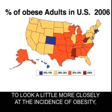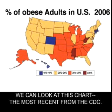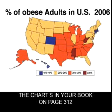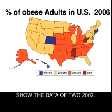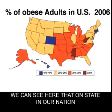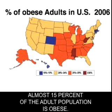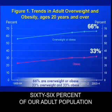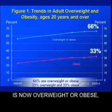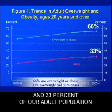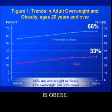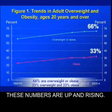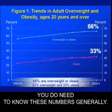To look more closely at the incidence of obesity, we can look at this chart — the most recent from the CDC. The charts in your book on page 312 show data up to 2002. We can see that in every state in our nation, at least 15% of the adult population is obese. 66% of our adult population is now overweight or obese, and 33% of our adult population is obese. These numbers are up and rising, and you do need to know them generally.